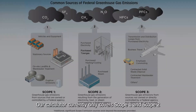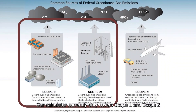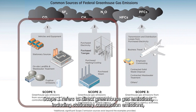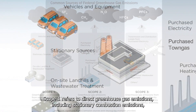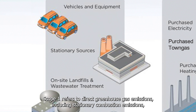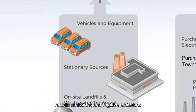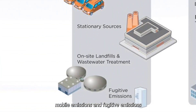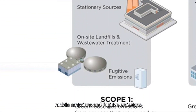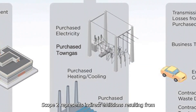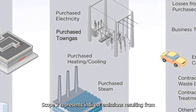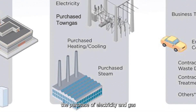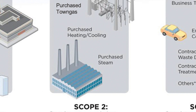Our calculator currently only covers Scope 1 and Scope 2. Scope 1 refers to direct greenhouse gas emissions, including stationary combustion emissions, mobile emissions, and fugitive emissions. Scope 2 represents indirect emissions resulting from the purchase of electricity and gas.